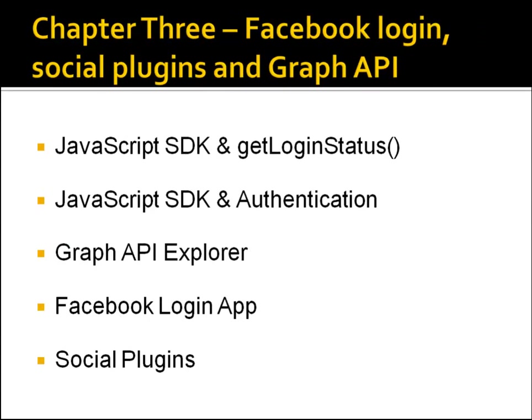After that, we will get started with programming. I'll go over the JavaScript software development kit and some of the APIs and methods, such as get login status. We'll learn how to check if a user is logged into Facebook and also if they're authenticated by our application. We'll go over the Graph API, which is pretty much how everything in Facebook is linked together — it has to do with objects and connections. We'll also take a look at the Graph API Explorer, a free tool that Facebook offers to actually see how the API works using JSON.